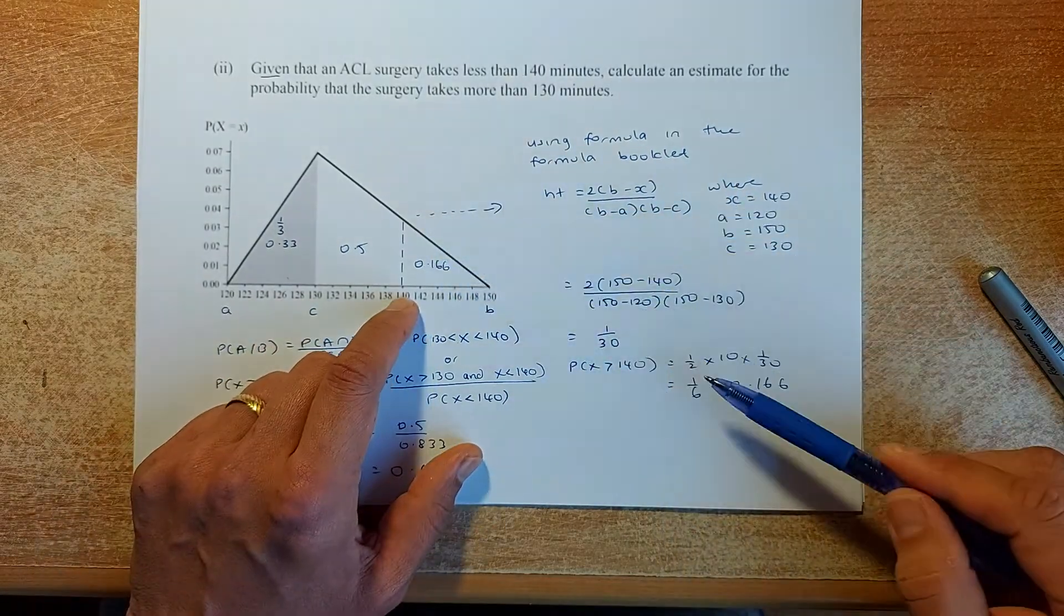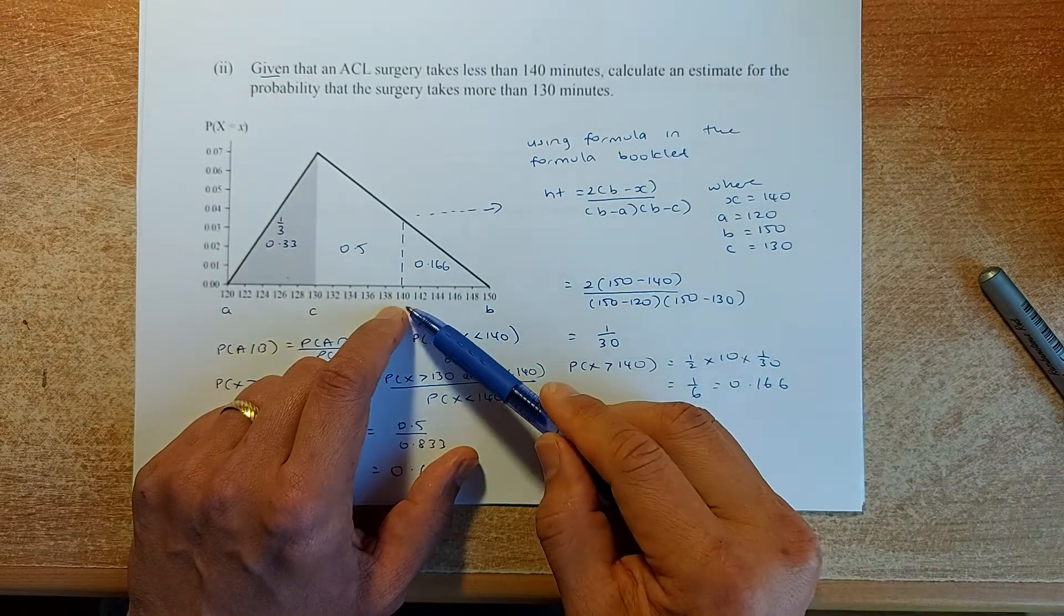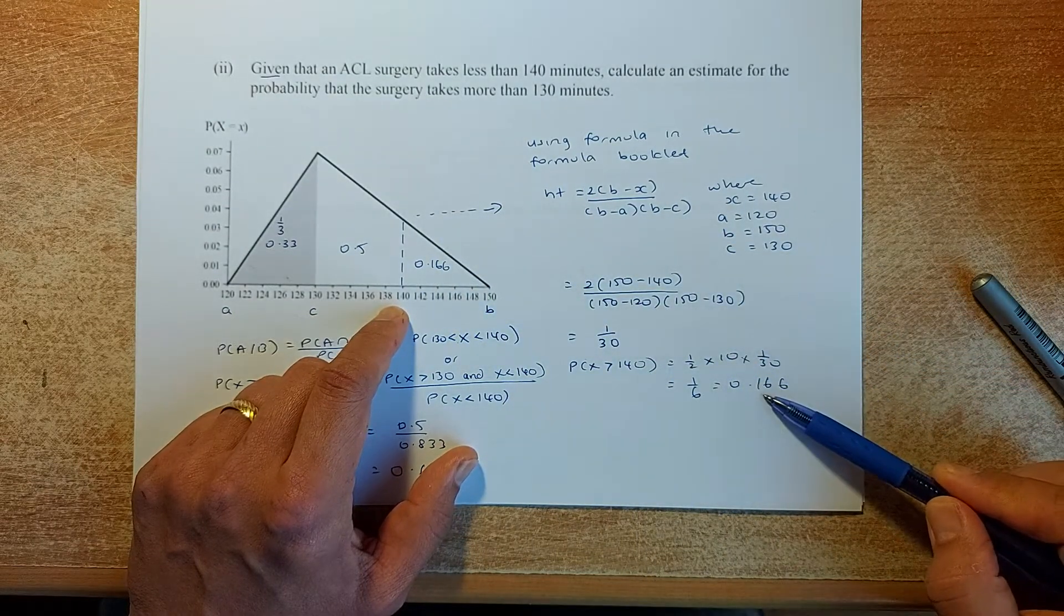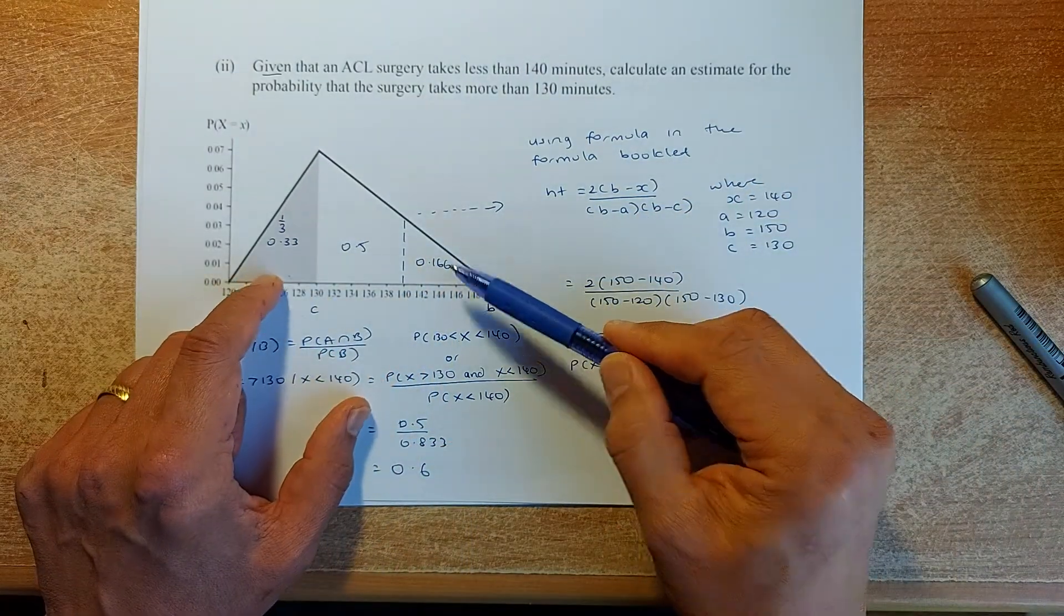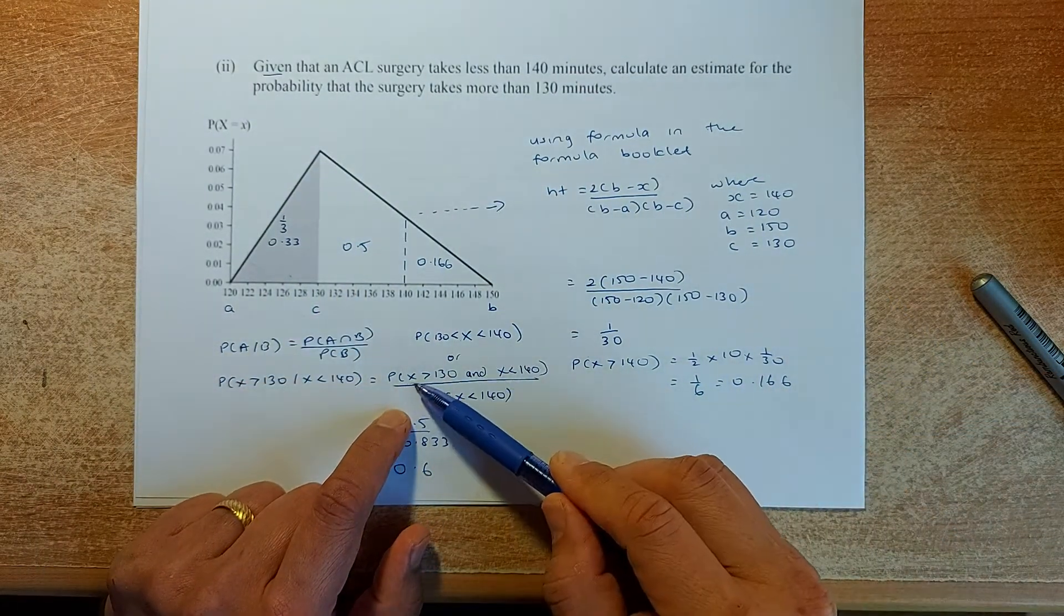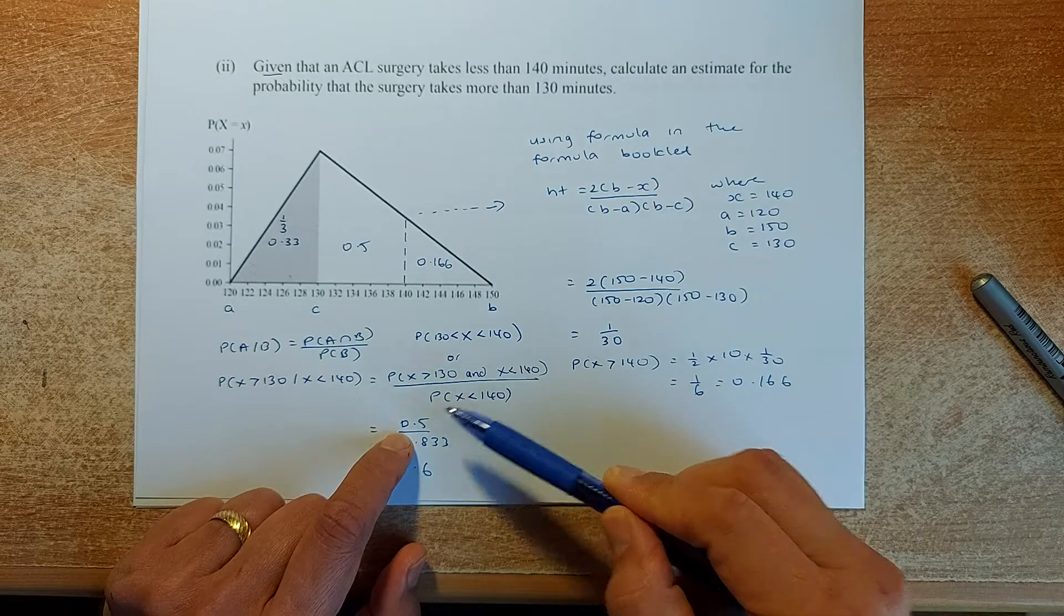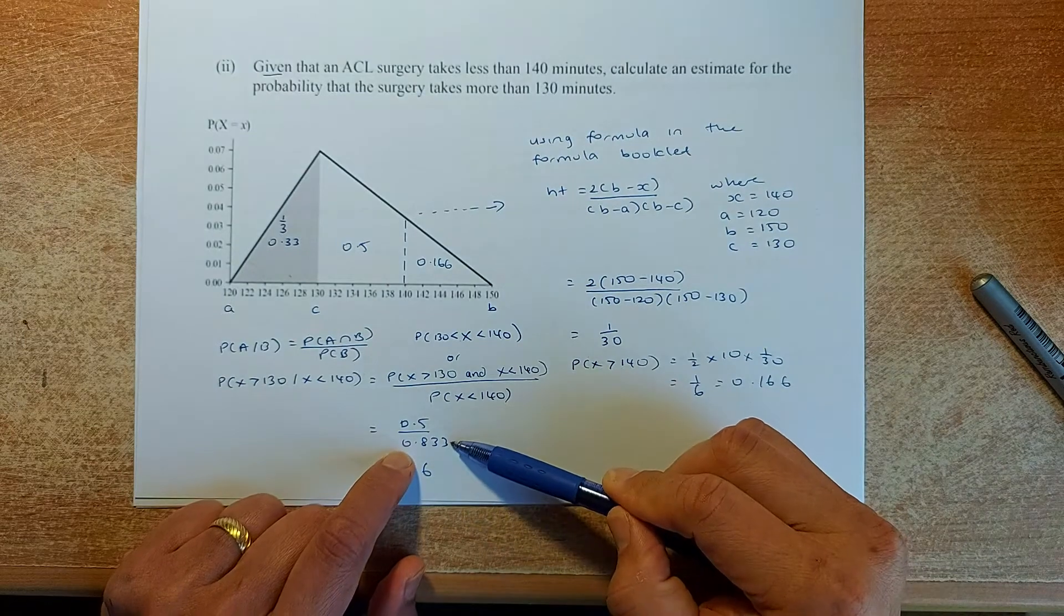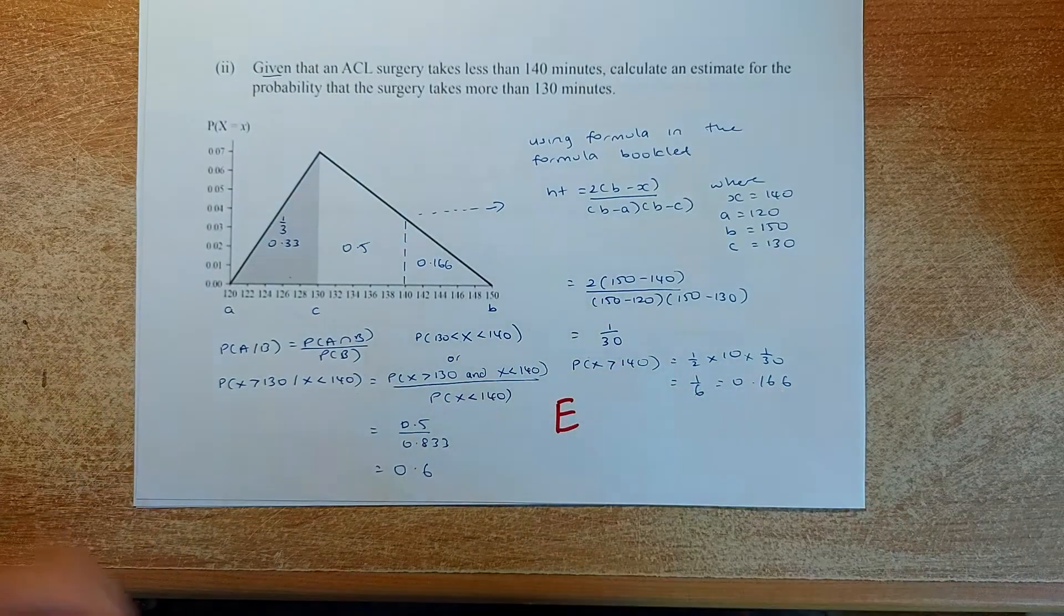Again, half times base times height. Area more than 140: half times base (150 - 140 = 10) times height (1 over 30). Put in your calculator, it's 0.166. So that area is 0.166. If you add them up, it's 0.5. Coming back to the conditional probability: the numerator is 0.5, and the probability less than 140 is 0.5 plus 0.333 equals 0.833. Put in your calculator, the answer should be 0.6. That will give you an excellence.